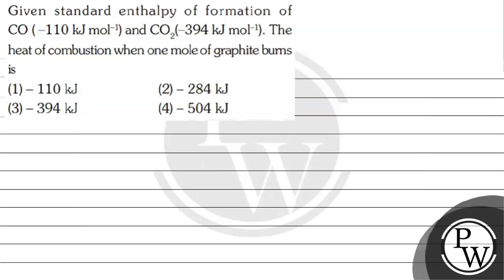Let's read this question. Given standard enthalpy of formation of CO is minus 110 kilojoule per mole and of carbon dioxide is minus 394 kilojoule per mole, the heat of combustion when one mole of graphite burns is: option one minus 110 kJ, option two minus 284 kJ, option three minus 394 kJ, option four minus 504 kJ.